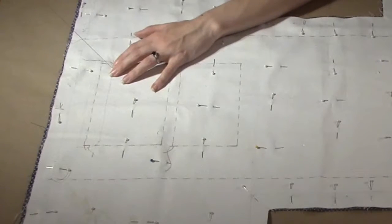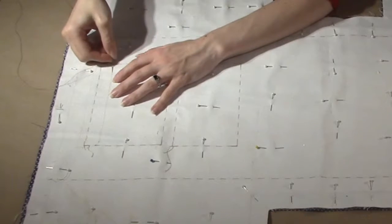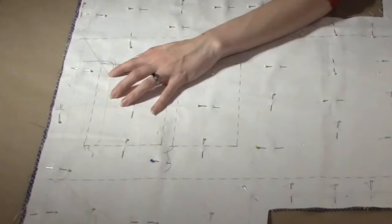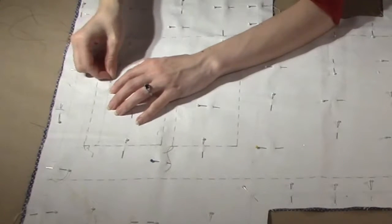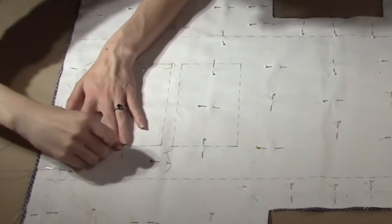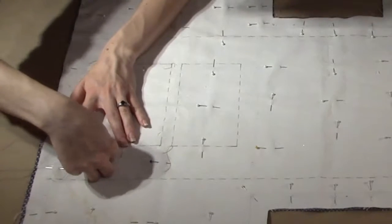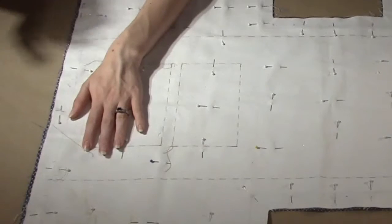While you are thread tracing, keep your project as flat as possible against the table. This will help prevent the layers of fabric from shifting as you sew. Use a tailor's tack at each corner to help define the corner on the right side. This will help you be more accurate in your pocket placement later on.